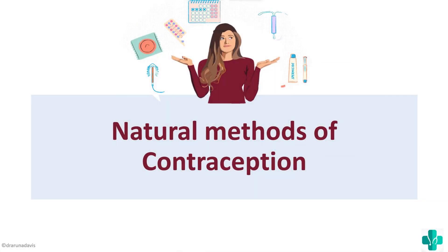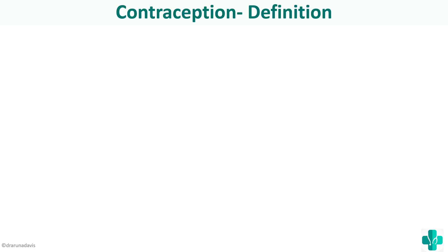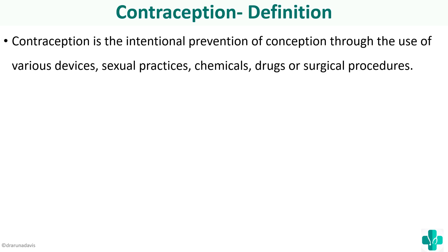In this video we are going to discuss the natural methods of contraception. Contraception is the intentional prevention of conception through use of various devices, sexual practices, chemicals, drugs, or surgical procedures. So basically it is the intentional prevention of conception.